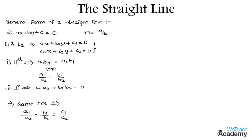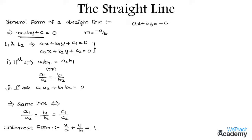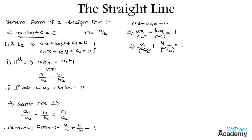Now let us learn the procedure for reducing the general form of a straight line into the intercept form, which is x/a + y/b = 1. For this, we transfer the constant term to the right-hand side to get ax + by = −c, then divide the whole equation by −c. This gives ax/(−c) + by/(−c) = 1, which can be written as x/(−c/a) + y/(−c/b) = 1. Here −c/a is the x-intercept and −c/b is the y-intercept.